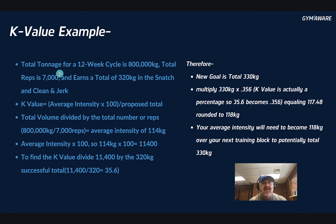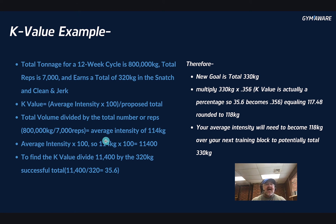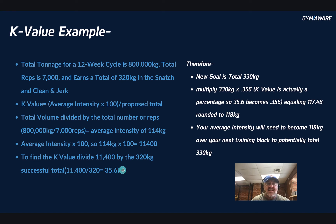Let's bring it home. Say total tonnage for a 12-week cycle is 800,000 kilograms, total reps is 7,000, and the athlete totaled 320 kilograms in the snatch and clean and jerk at competition. So: 800,000 divided by 7,000 equals an average intensity of 114 kilograms. Then 114 times 100 equals 11,400. Divided by 320 kilograms equals a k value of 35.6.